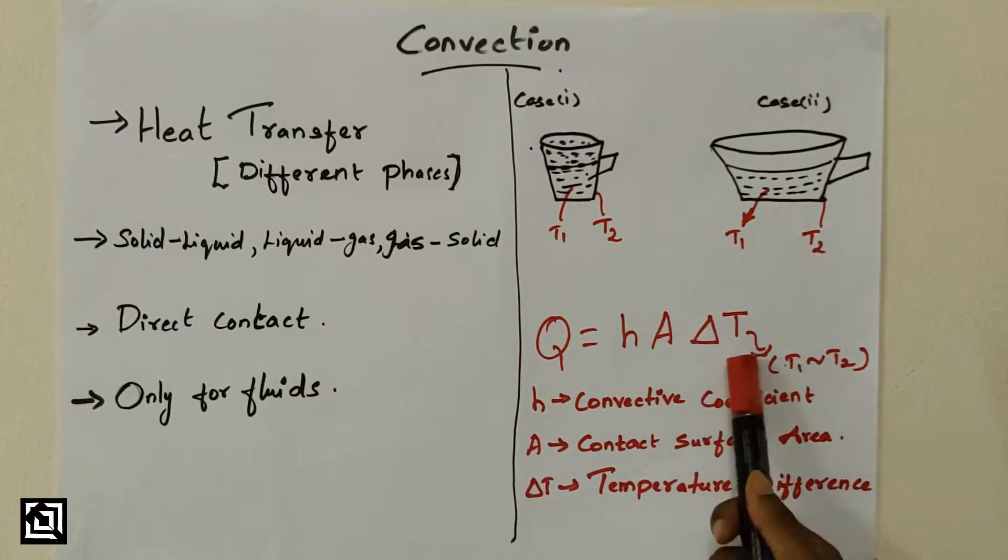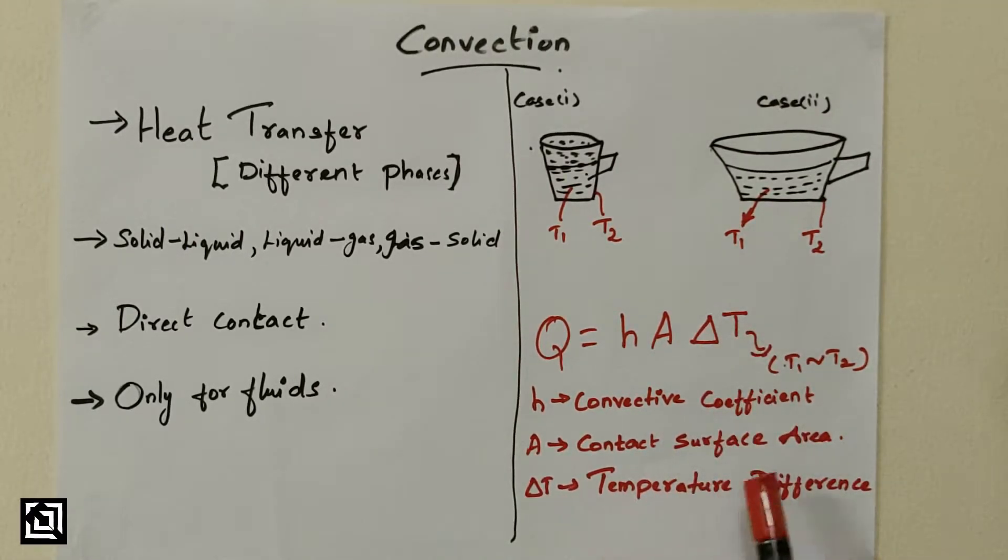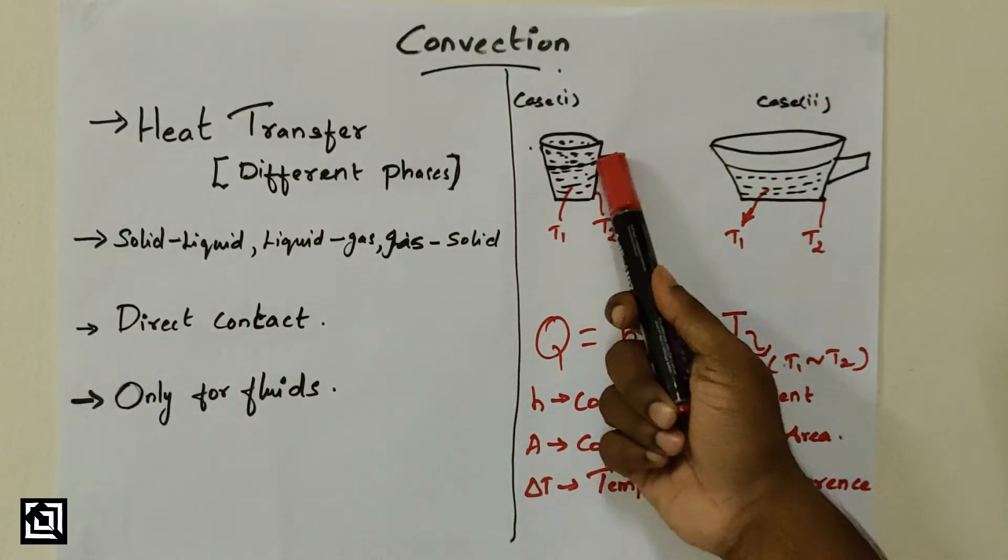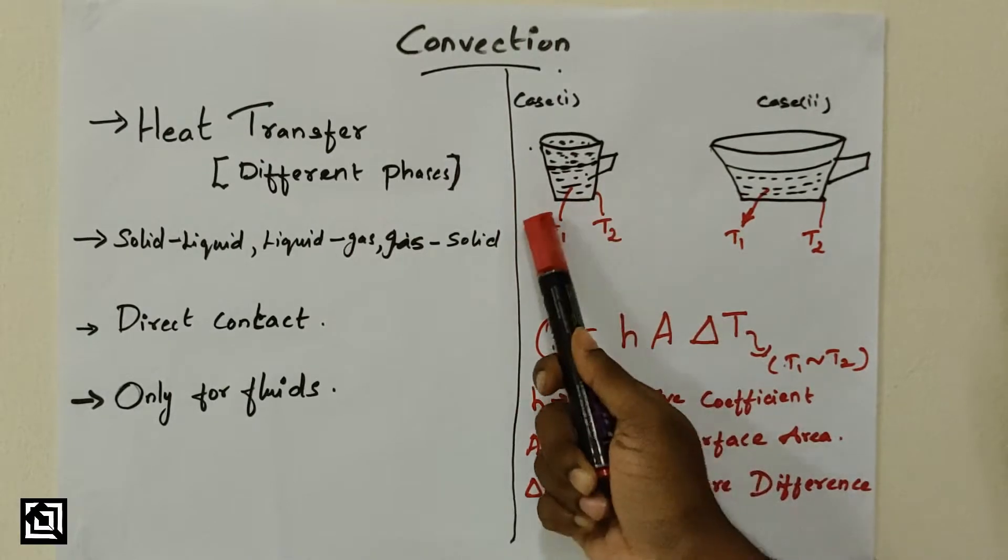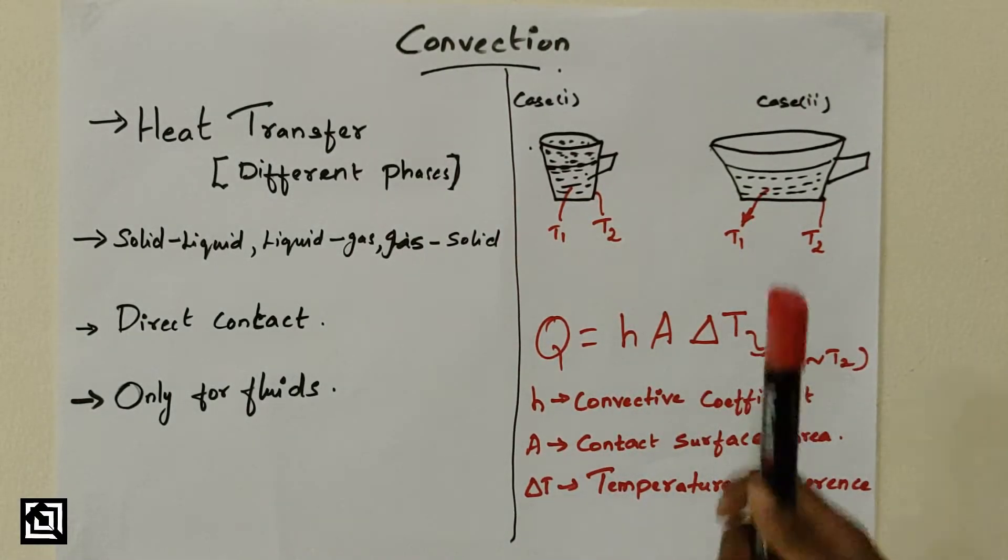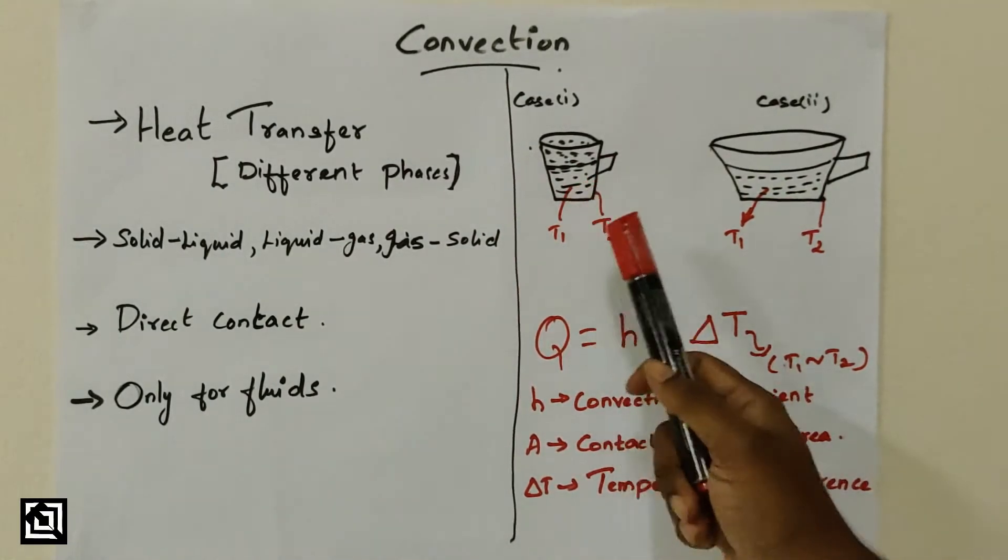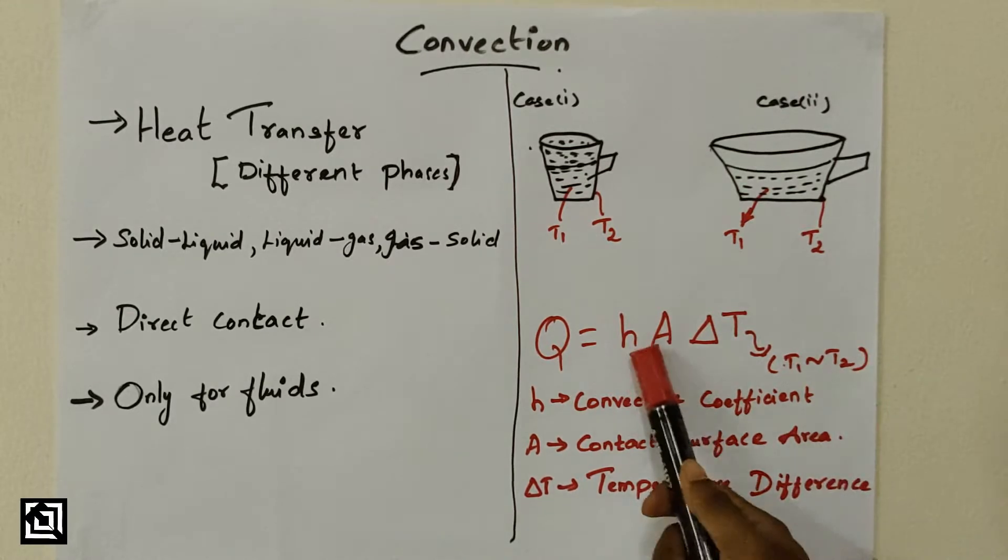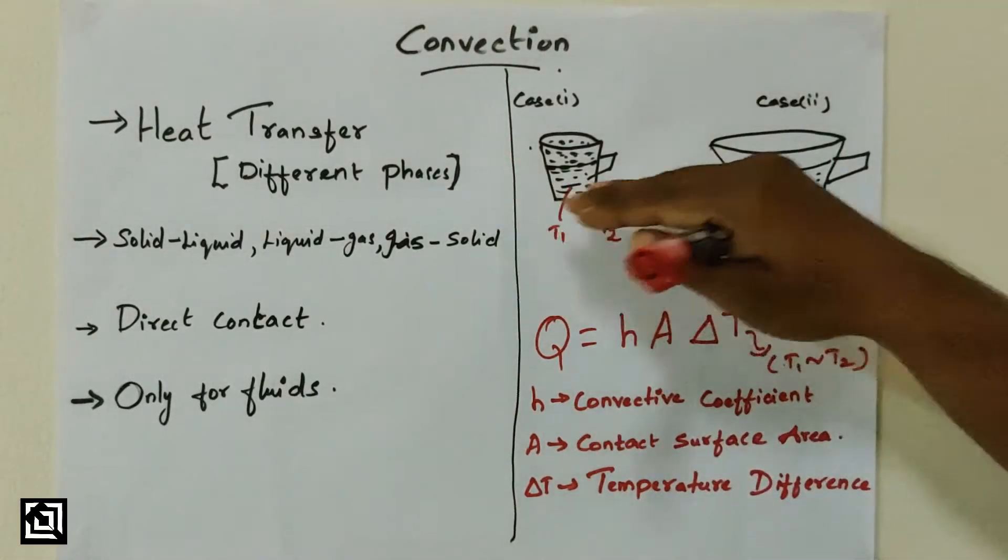The next factor is ΔT, the temperature difference. If you have hot water temperature T1 and cup temperature T2, then T1 and T2 give the temperature difference ΔT. In the two cases, h is constant. The same fluid is constant. ΔT is constant in the two cases.